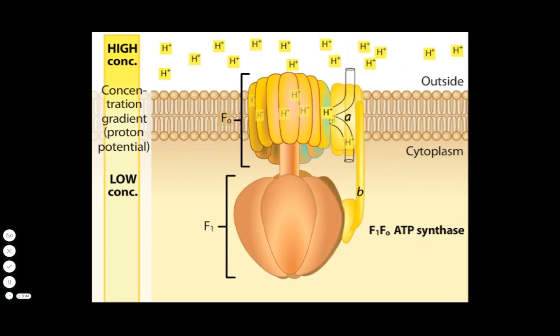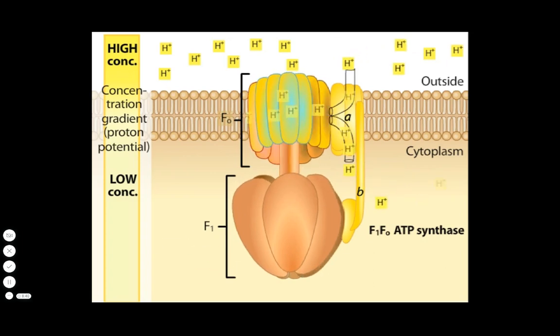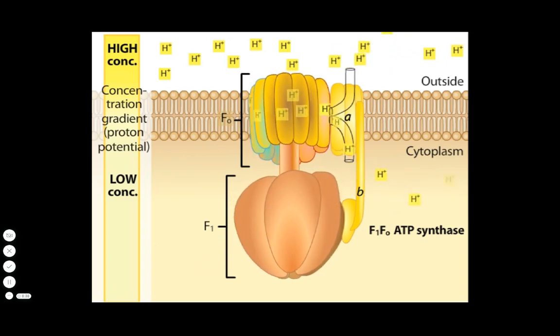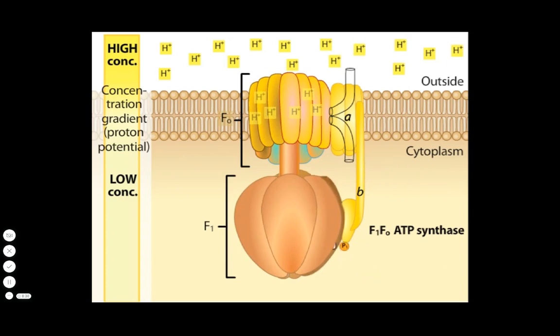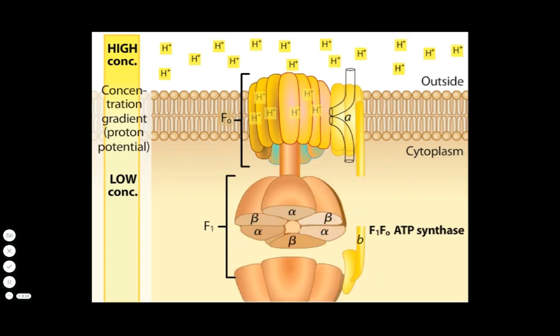Note that as F0 rotates, the axle also rotates, but F1 does not. F1 is held in place by its connection to the membrane through the A and B subunits.